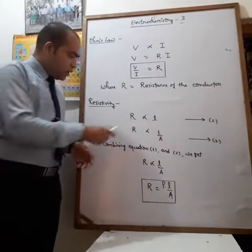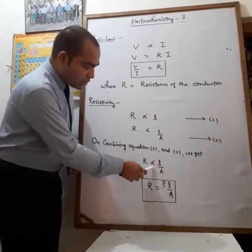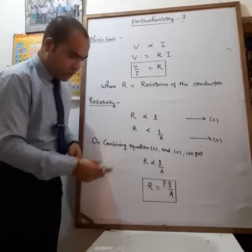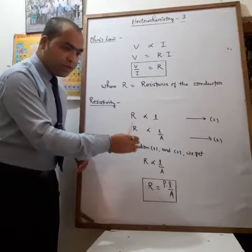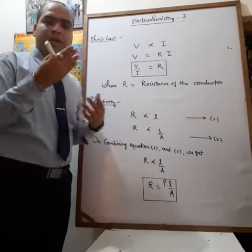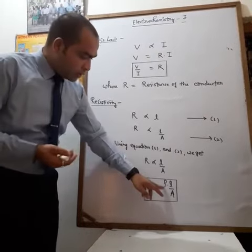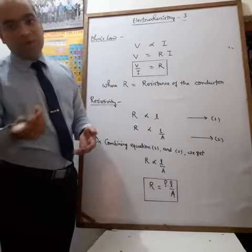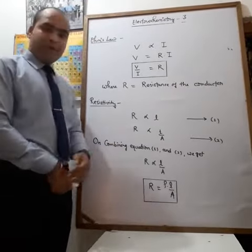Now we will combine both equations, so the equation will become R is directly proportional to L upon A. Now remove the sign of proportionality and introduce a constant, and this constant is called rho, which is our resistivity or that is also known as specific resistance. The unit of the specific resistivity is ohm into centimeter. This is for today, thank you.